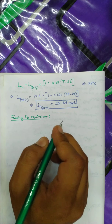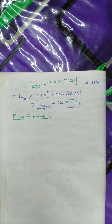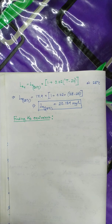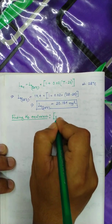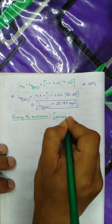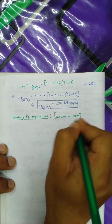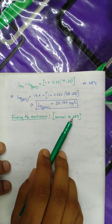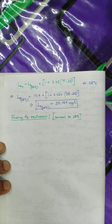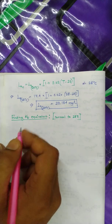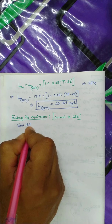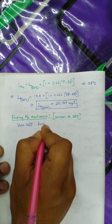We are finding the KD equivalent. From the question, we know that every data is given at 20 degrees centigrade, so what we have to do is convert this to 28 degrees centigrade. This is what is meant by equivalent — every value has a different value at different temperatures. So we have to find what is the value of KD at 28 degrees centigrade. For this we use the Van't Hoff-Arrhenius equation.